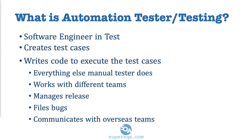An automation tester creates test cases, just like a manual tester does. So it does everything a manual tester does plus more, which means the automation engineer actually writes code and less of the other stuff, because you can't possibly do everything. In terms of working with other teams and manually testing, there is minimal manual testing. A lot of job positions say 80% automation and 20% manual, but you still have to do a little bit of manual work before you do automation.